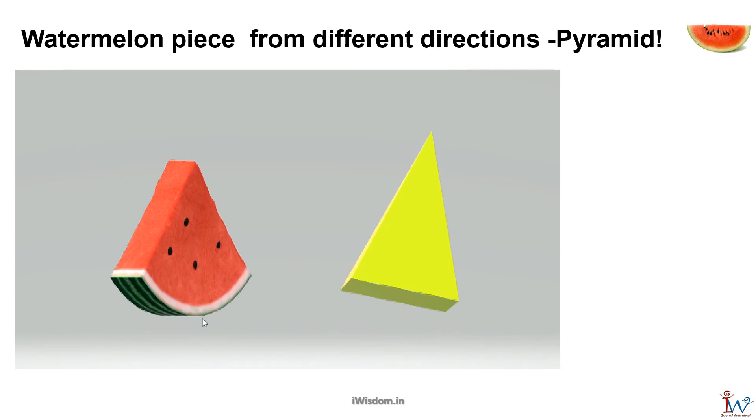Pyramids have triangular sides while base could be square or a triangle. If the base is circular they become cone, like the one you get with ice cream.